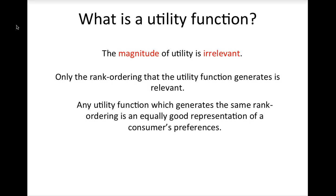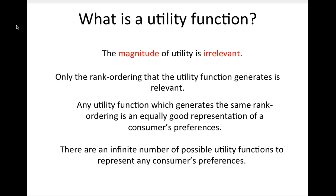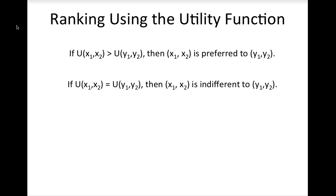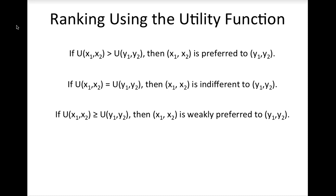Any utility function which generates the same rank ordering is an equally good representation of a consumer's preferences. Thus, there are an infinite number of possible utility functions which could represent any given consumer's preferences. Because there are so many possible utility functions to choose from, when we are working with real-world consumer choice data, we often choose a form for the utility function that is mathematically simple to work with. Ranking using the utility function is easy: if the utility of one bundle is greater than the utility from another bundle, then the bundle with the higher utility value is the preferred bundle. If the utility values for two bundles are the same, then the consumer is indifferent between them. If the utility of one bundle is greater than or equal to that of another bundle, then the first bundle is weakly preferred to the second.